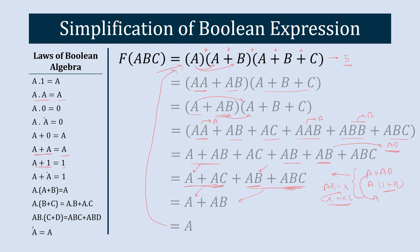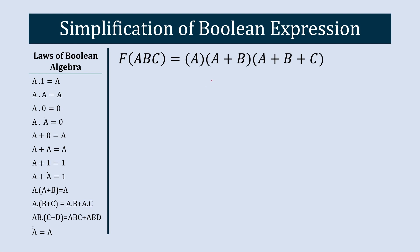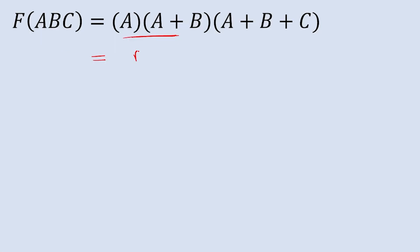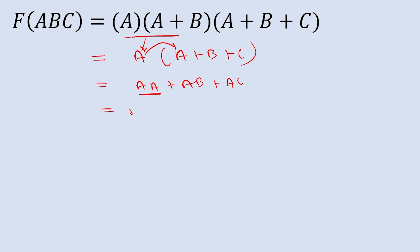Let's solve the same equation using another, shorter way. Here you can see A·(A plus B). By the Boolean law A·(A plus B) equals A, we can directly replace this entire term with A. So we write A in place of it, and A plus B plus C stays as it is. Now multiplying A with all three terms gives A·A, A·B, and A·C.